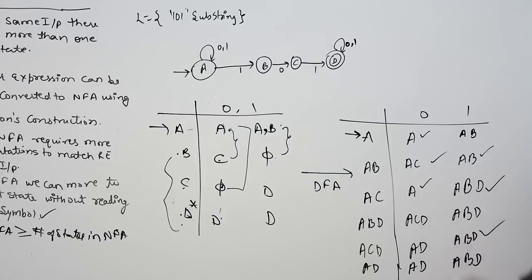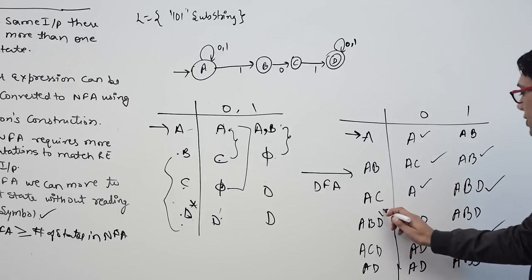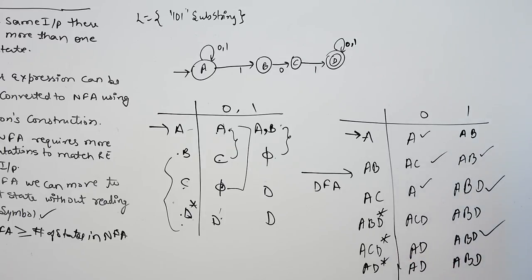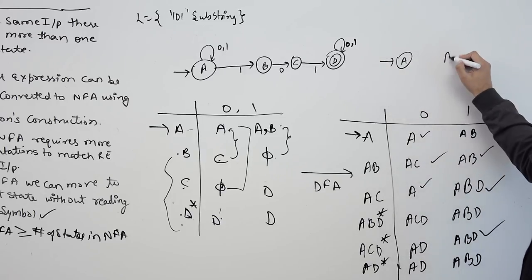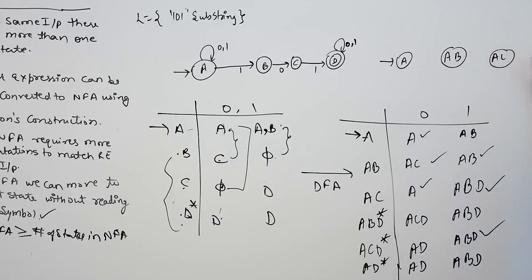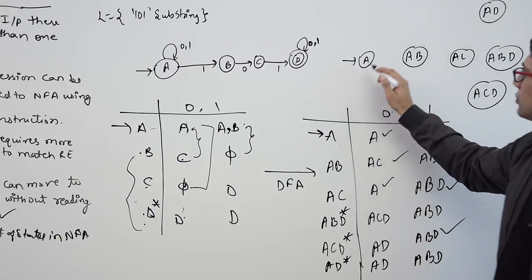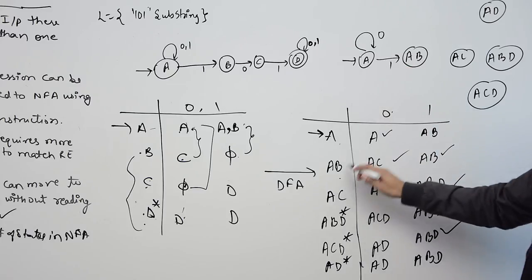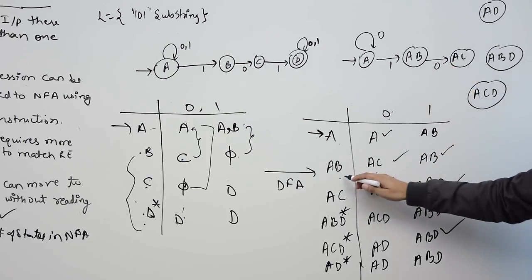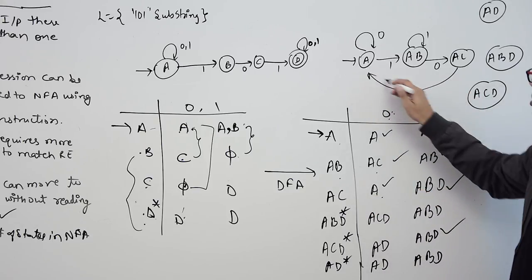Now, D was the final state in the NFA, so wherever D appears in a combined state, that combined state becomes a final state in the DFA. So ABD, ACD, and AD are final states. The DFA has states: A, AB, AC, ABD, ACD, and AD. From A on 0 go to A, on 1 go to AB. From AB on 0 go to AC, on 1 go to AB.